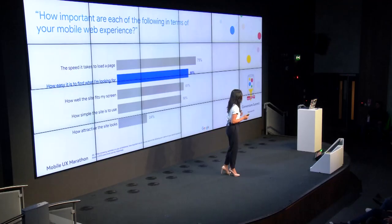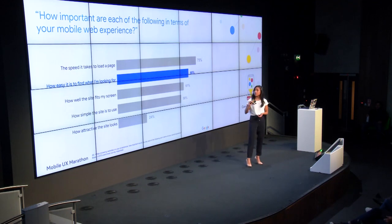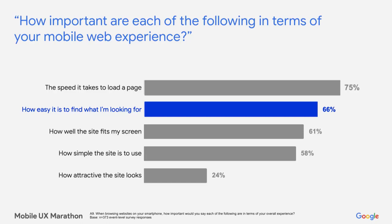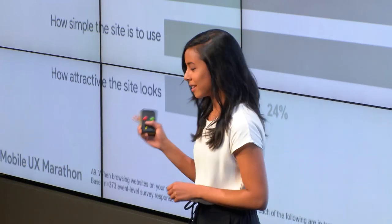Let's take a step back at our full spectrum of users. When it comes to the importance of a user's mobile web experience, we asked hundreds of people what was most important. We found that speed was the number one factor. I really want to focus more deeply on the ease of finding what you're looking for on the page. When it comes to findability, accessibility is super crucial — way more important than how attractive the site looks.